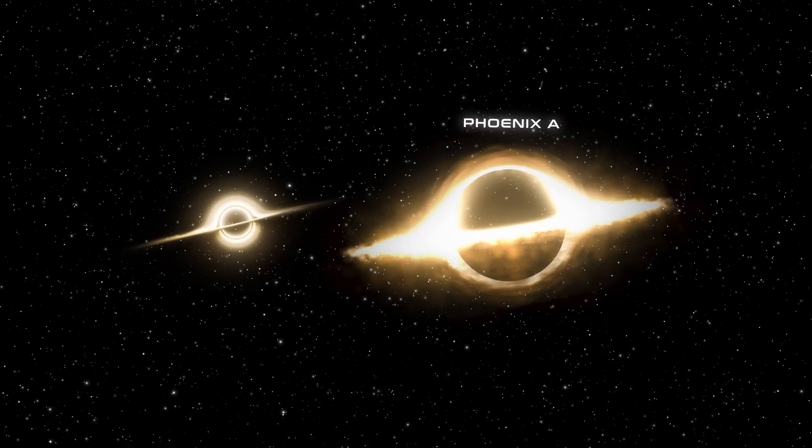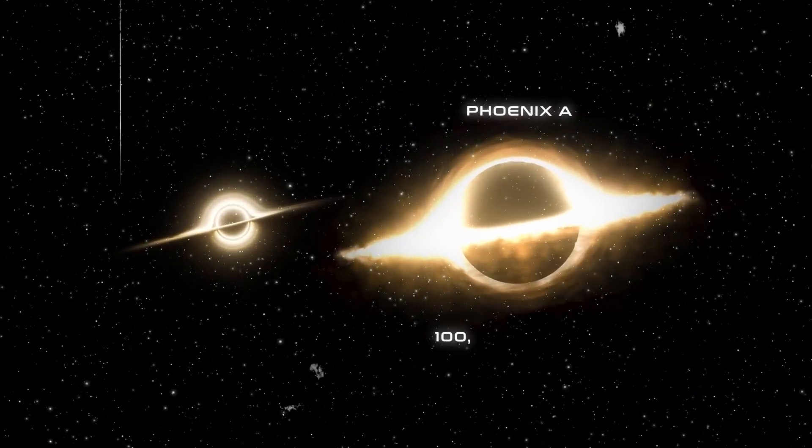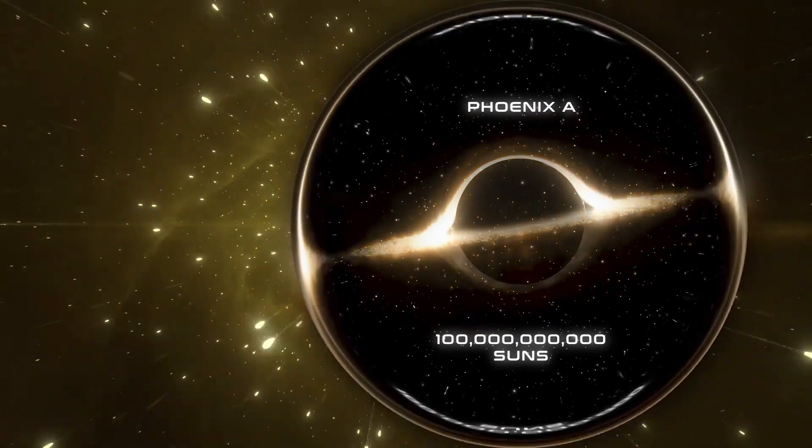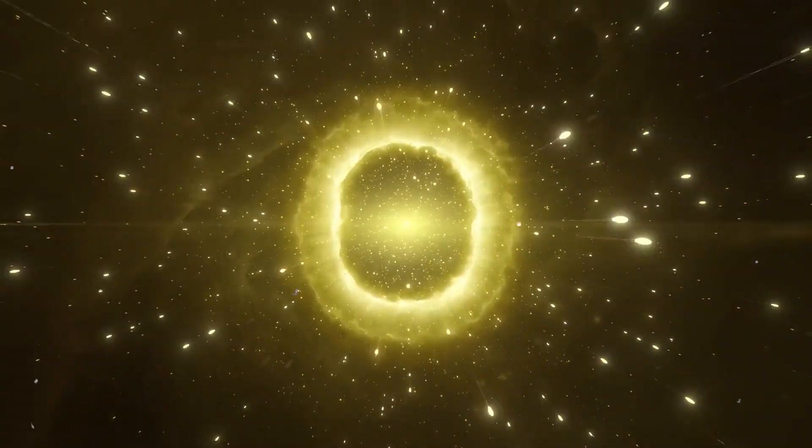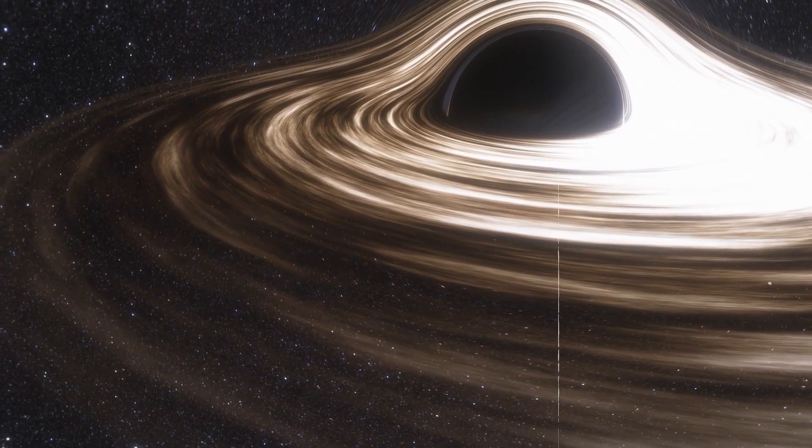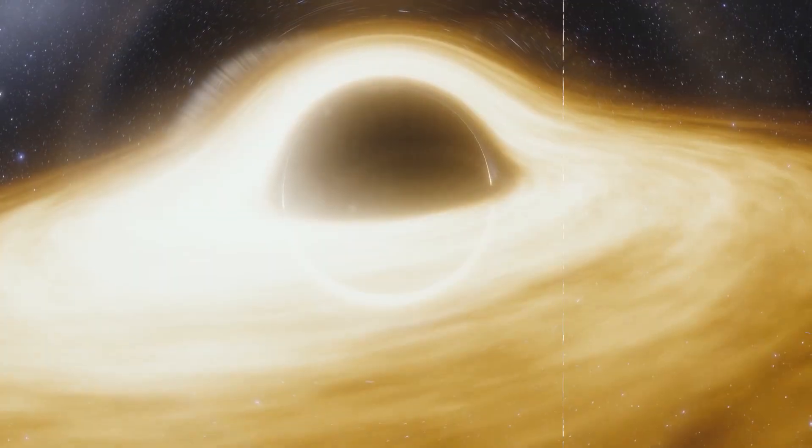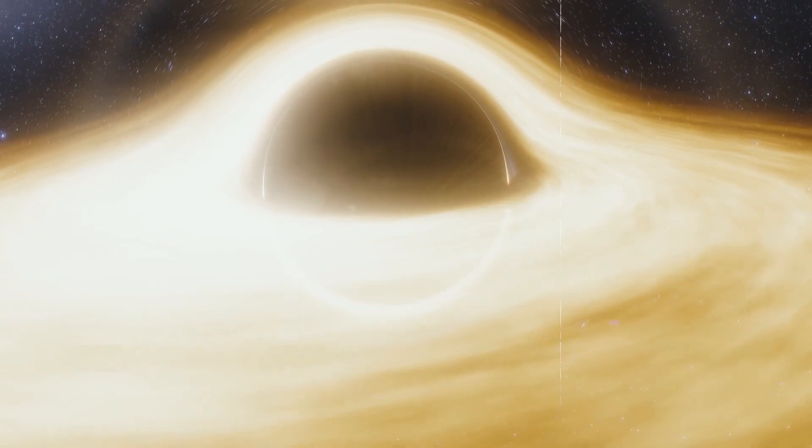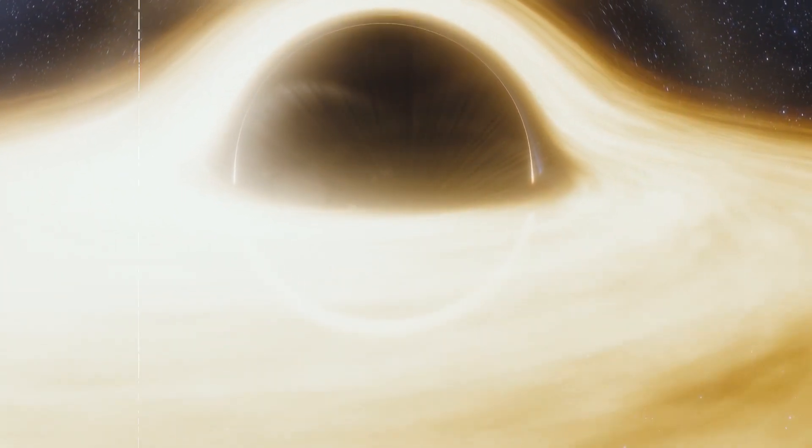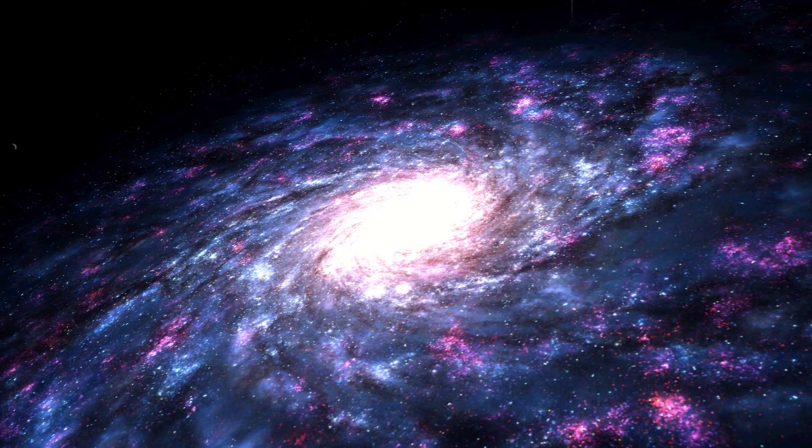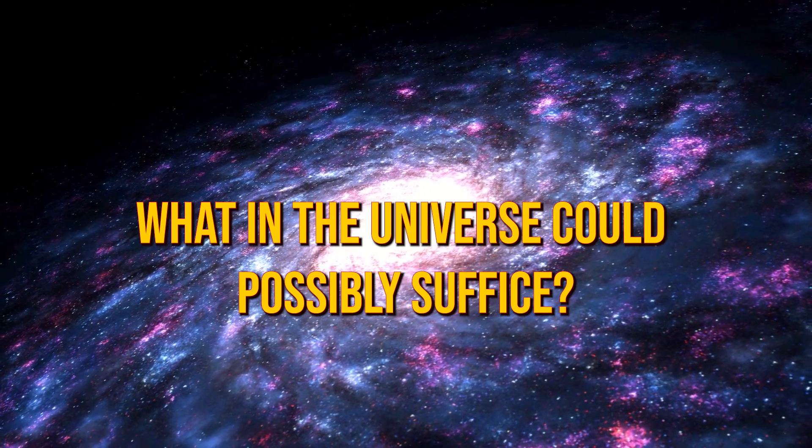Interestingly, scientists may have stumbled upon an even larger ultra-massive black hole, Phoenix A, boasting around 100 billion solar masses, though there's still some contention regarding its actual size. Regardless, whether it's TON 618 or Phoenix A that takes the crown, the mystery persists. If even these titans of the cosmos fall short of explaining the gravitational pull of the Great Attractor, then what in the universe could possibly suffice?